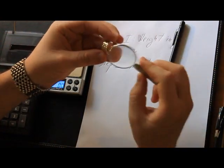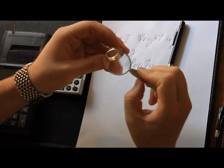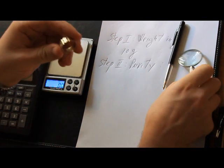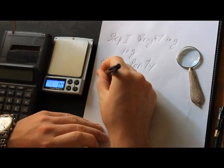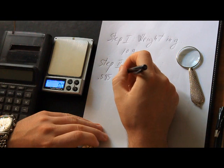For this, you need a magnifier. Usually the purity of the gold of your item is on the inside of the ring. So yeah, I can see 0.585 here. This normally corresponds to 14 carat gold.